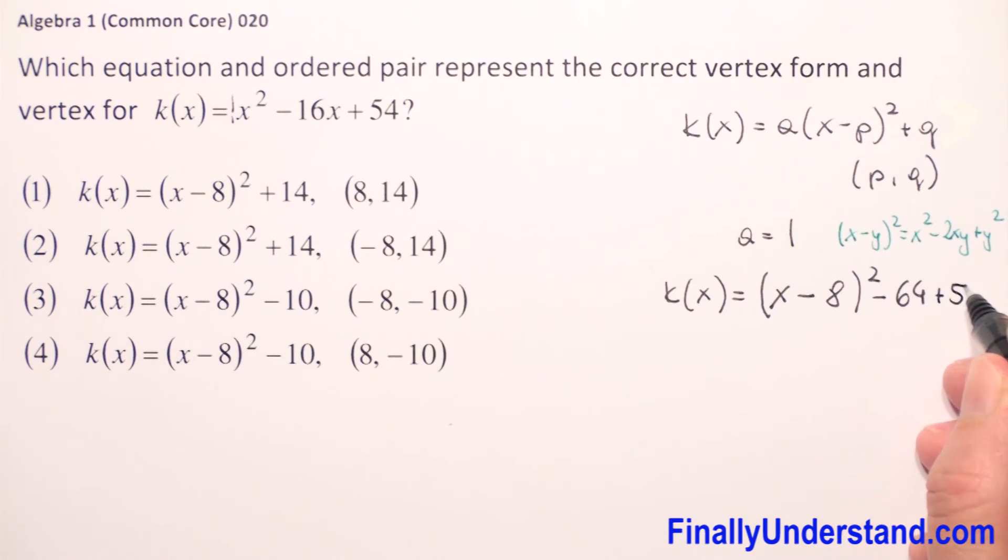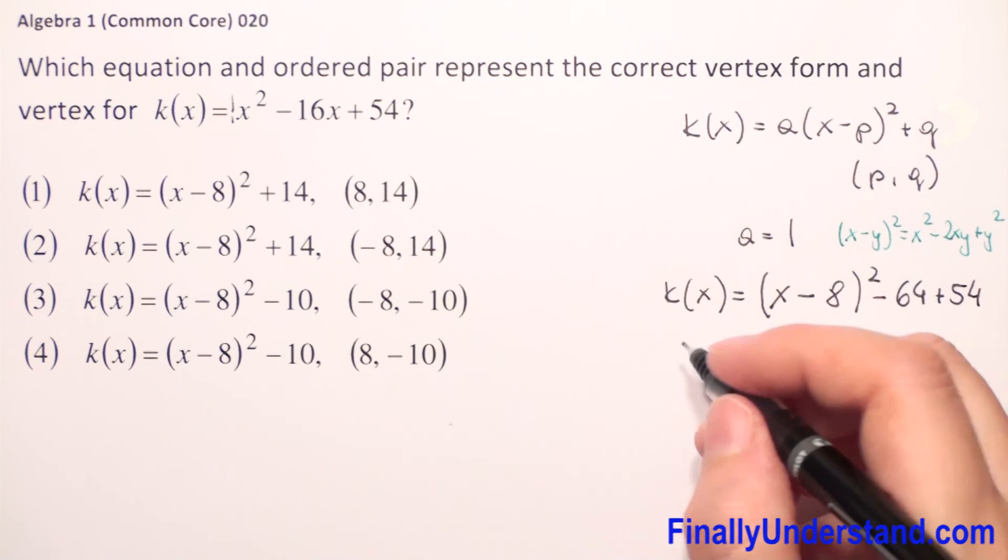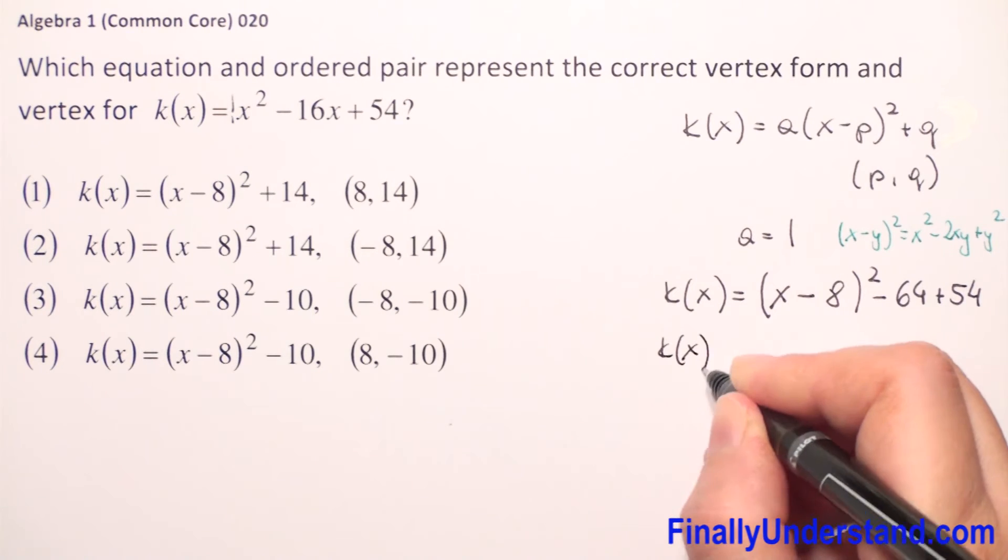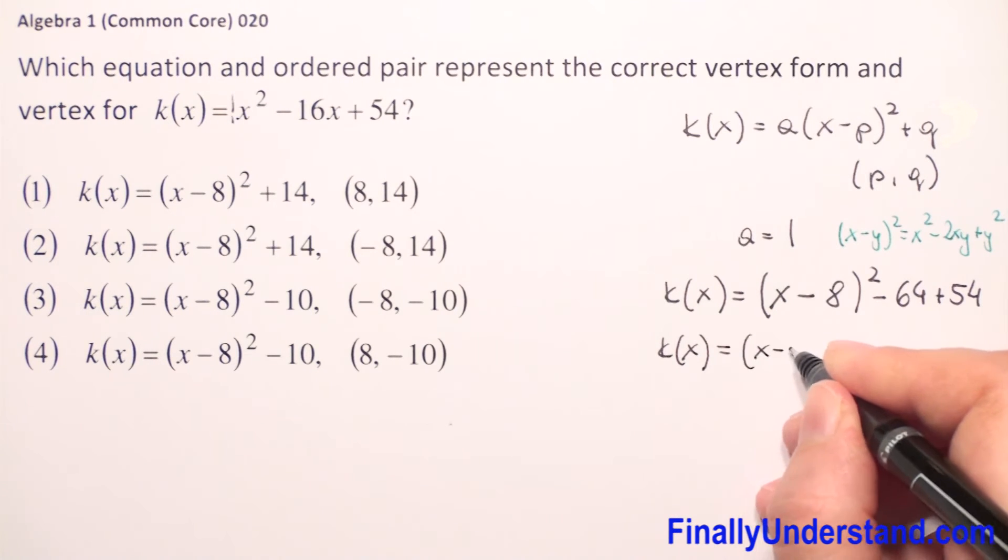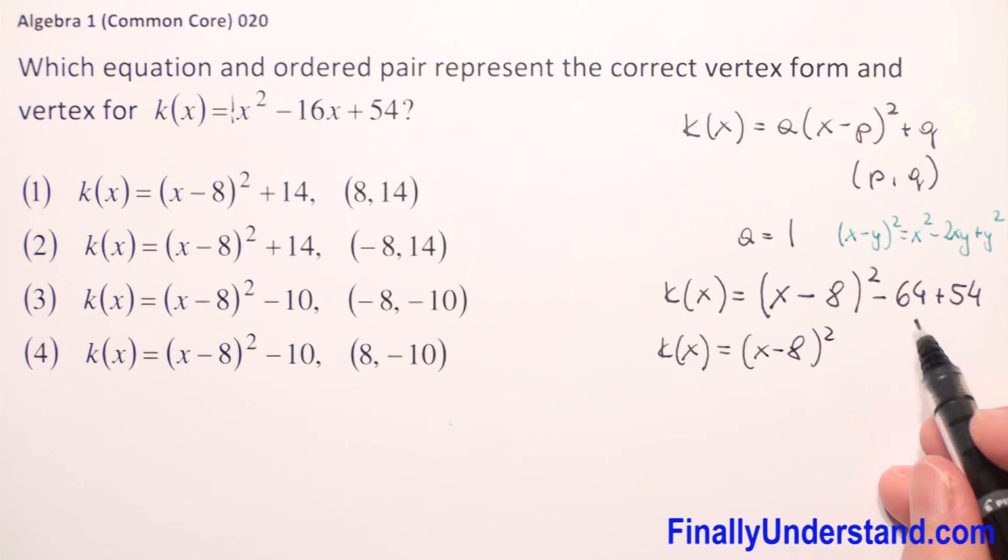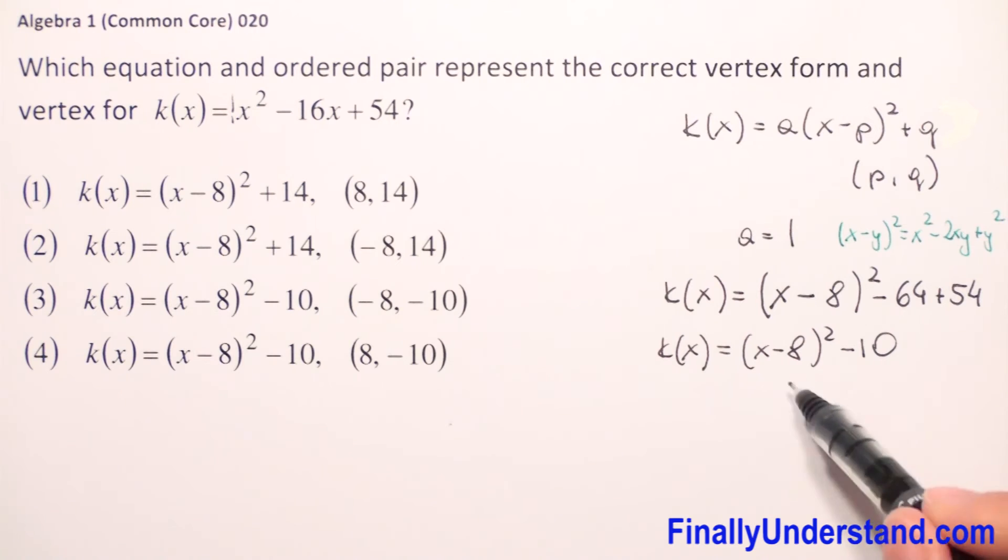And we copy whatever we have here. We have plus 54. So let me rewrite this: k(x) = (x - 8)² - 64 + 54, which is -10. We obtain the vertex form of our equation.